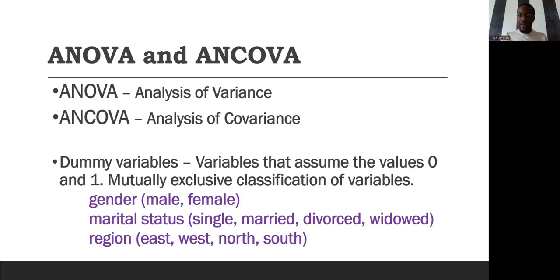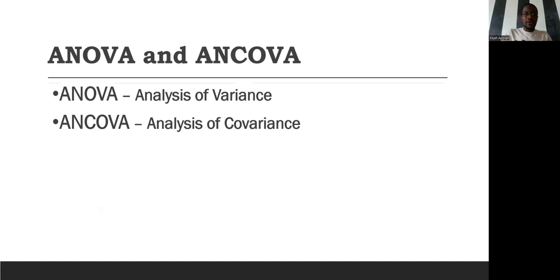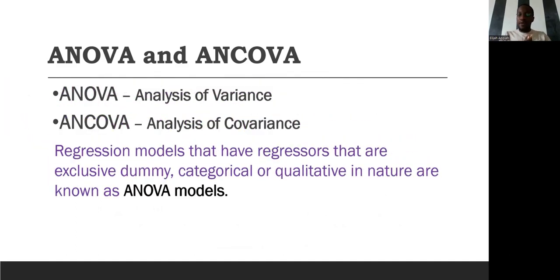When you grab gender, once it's categorical with two categories — male and female — those are just categorical variables. But gender becomes a dummy variable when we assign the value labels zero and one to its categories. Whenever you are running a regression model and your independent variables are exclusively dummy or categorical or qualitative in nature, then you are running what we call ANOVA models.